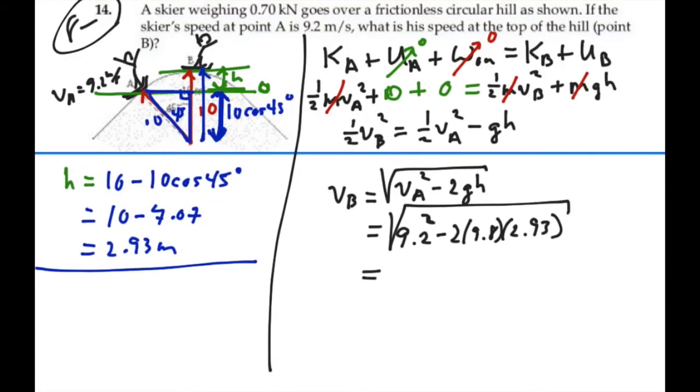So I got 9.2 squared which is 84.64 minus 2 times 9.8 times 2.93 gives me a total of 27.2 square root 5.22 meters per second.